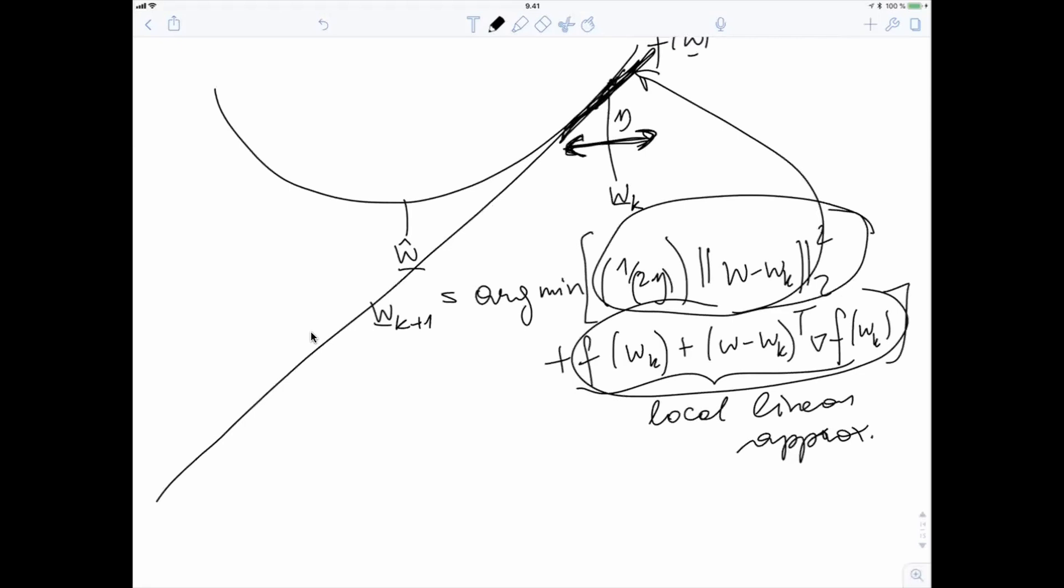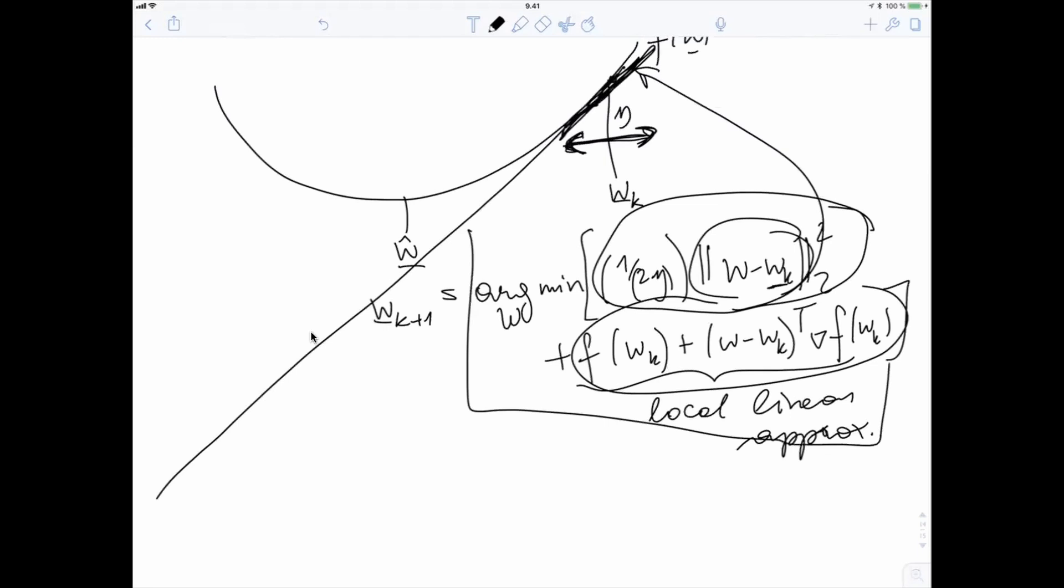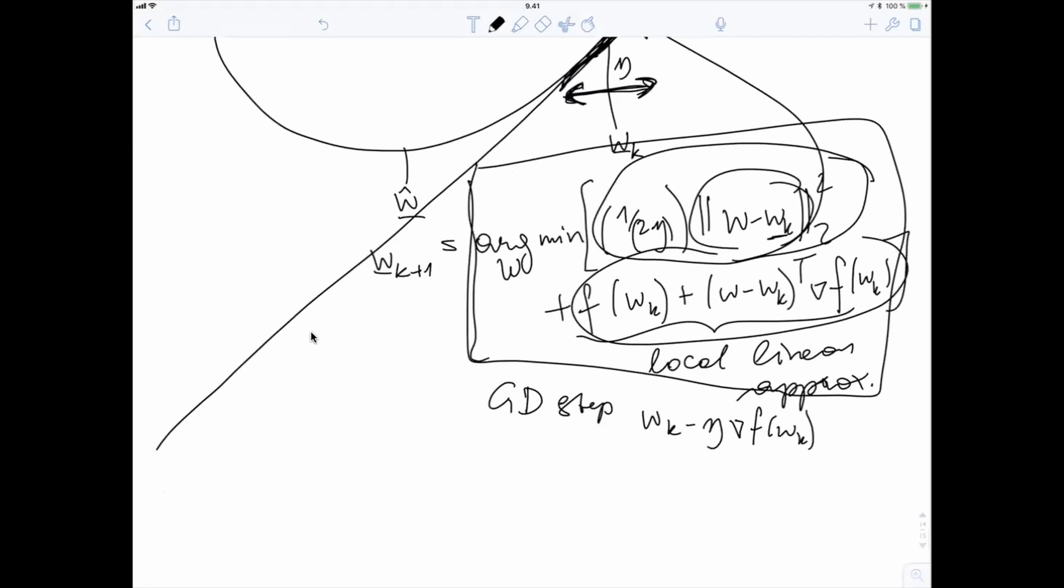This first term, this squared Euclidean norm, keeps the solution of this optimization problem close to the current parameter vector wk. This couples or bounds somehow the updated parameter vector to wk. And this here is a precise equivalent formulation of a gradient step. So this is exactly the same as wk minus eta gradient wk. This is a simple exercise to verify that this minimization or that this optimization problem is minimized for this gradient step or the result of this gradient step.